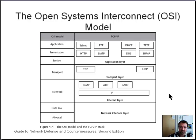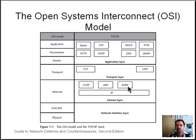ARP is the protocol that connects an IP address with a MAC address, which is your hardware address. And then you have Reverse ARP (RARP), which is the opposite — the computer needs to connect a MAC address with a particular IP number.